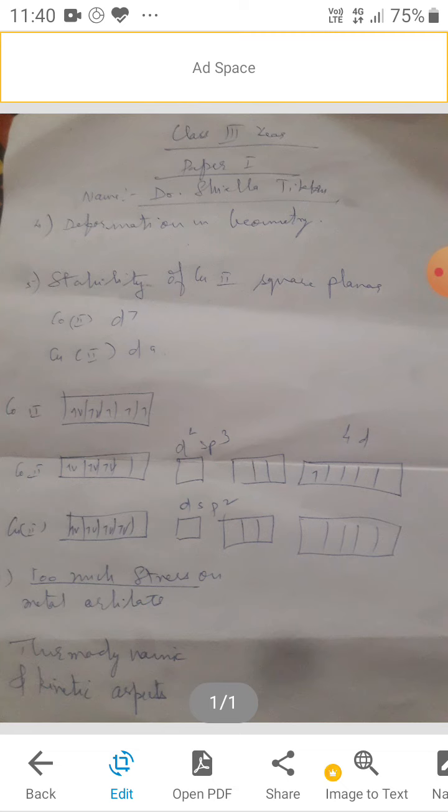Jayamiti ke andar, jab kharabi aati hai, toh us cheeze ko Valence-Bond Siddhant nahi bata pata. When there is a deformation in the geometry, the Valence-Bond Theory cannot explain anything about this.